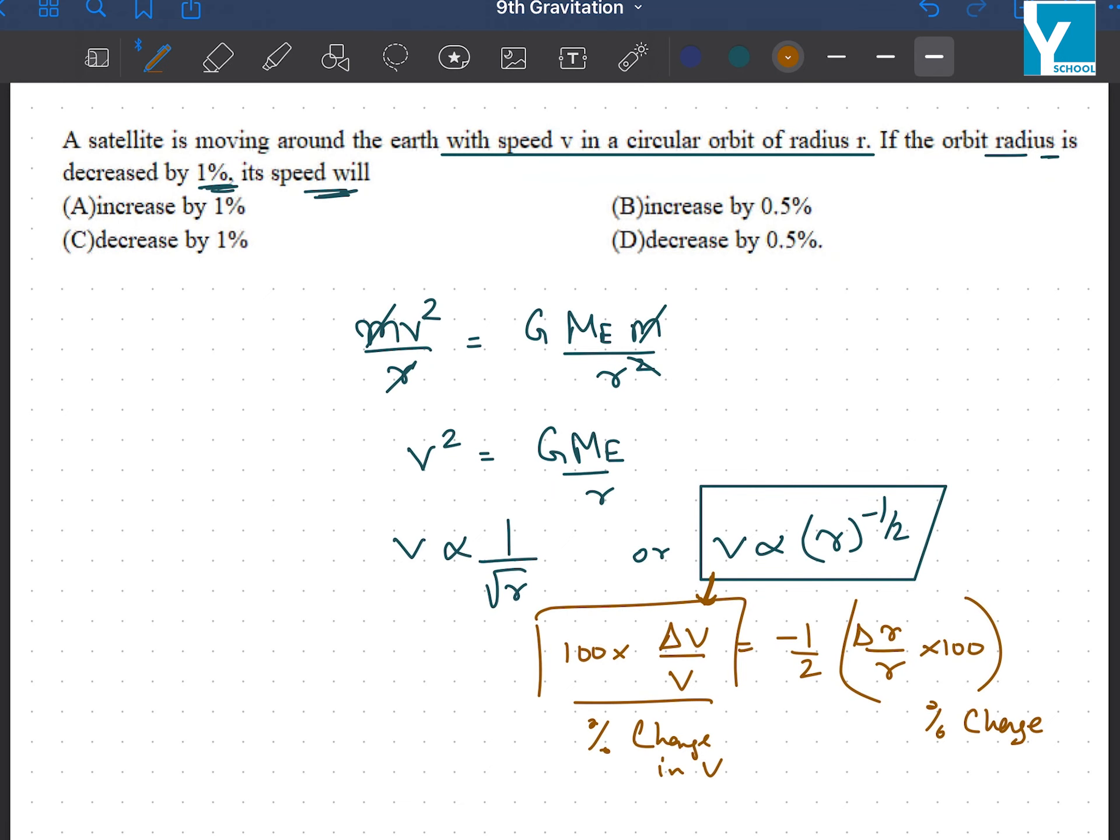So we know that percentage change in our radius is 1%. So the percentage change in v will be minus 1 by 2 into 1%. Let me solve it out here. Percentage change in v will be equal to minus 1 by 2 into 1%, and this will be minus 0.5%. So as you can see,